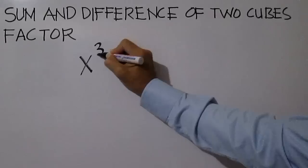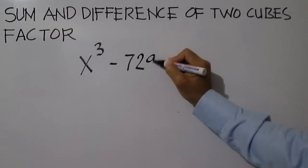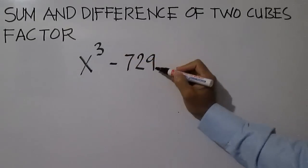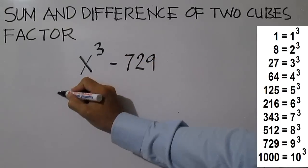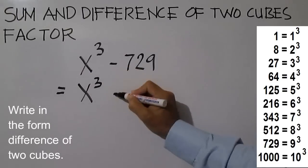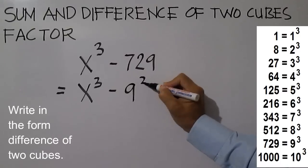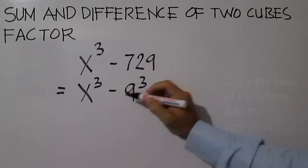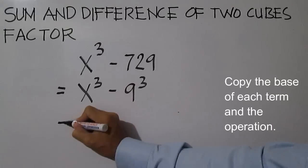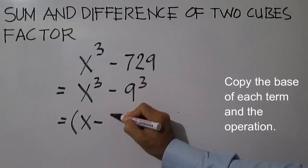Factor x cubed minus 729. This time it is difference of two cubes. Write in the form difference of two cubes: x cubed minus 9 cubed. Then copy the base including the operation: x minus 9.